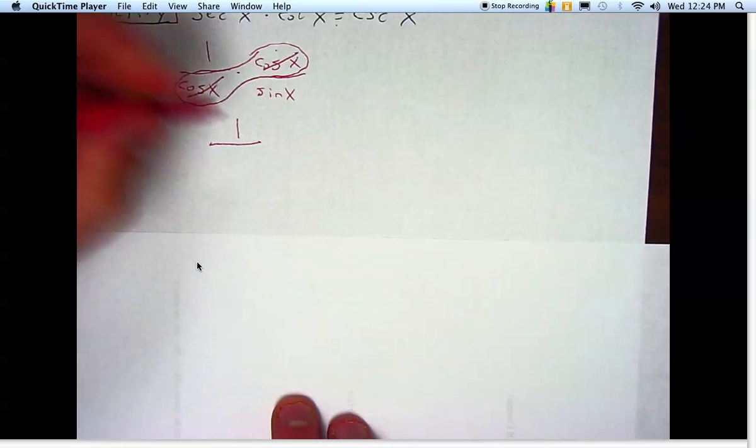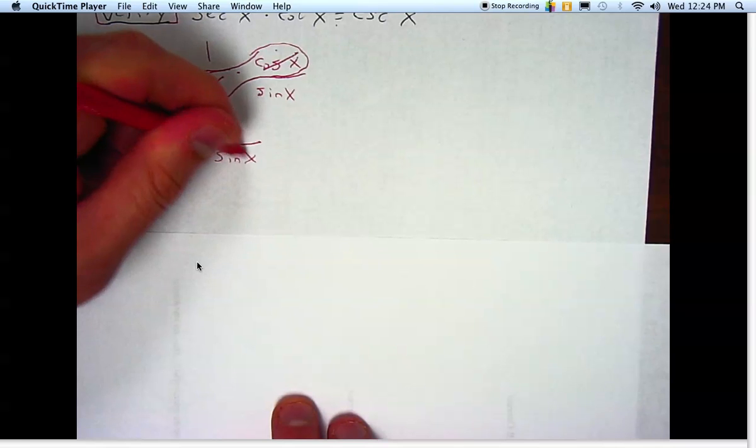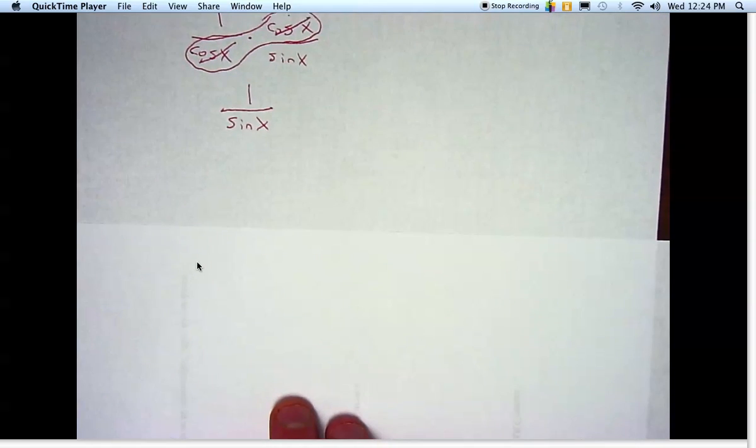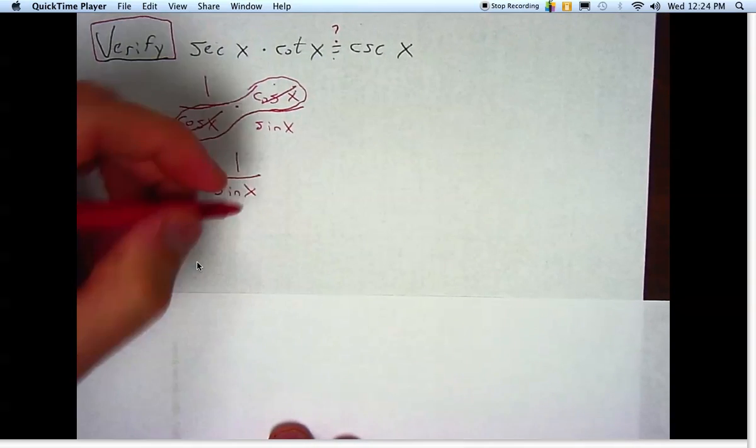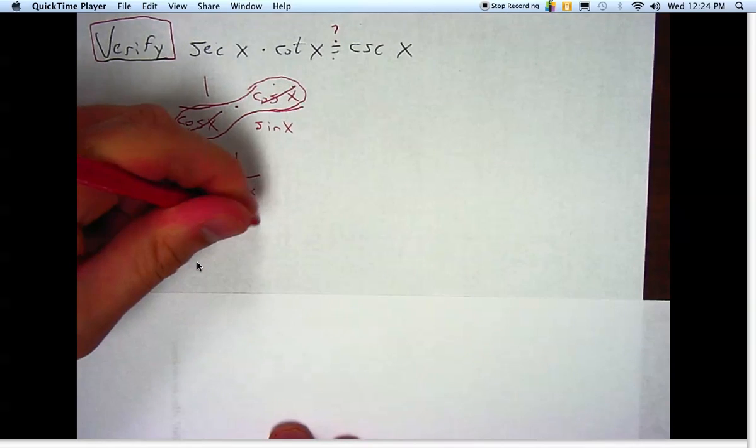And so I get one on the top is all that's left, and sine of x is all that's left on the bottom. And what's one over sine of x? Well, cosecant of x.